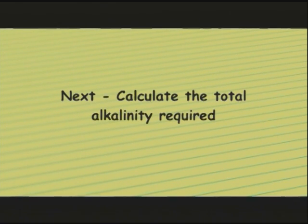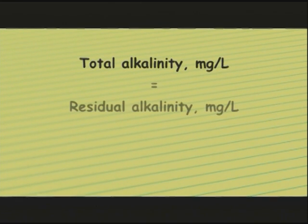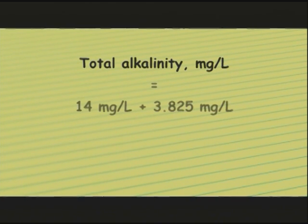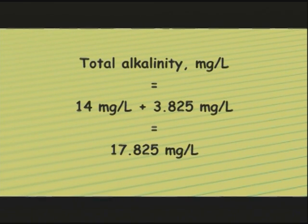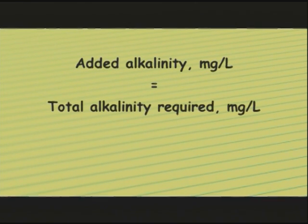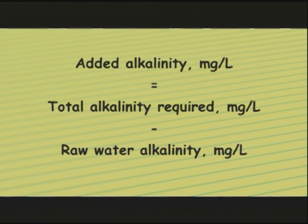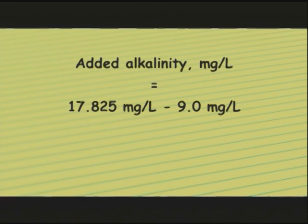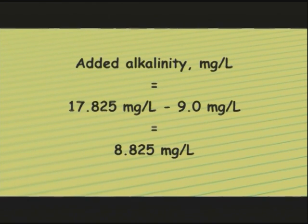Next, calculate the total alkalinity required. Total alkalinity equals residual alkalinity plus alkalinity consumed by alum: 14 mg/L plus 3.825 mg/L equals 17.825 mg/L total alkalinity. Then, determine the amount of alkalinity that must be added to the water: added alkalinity equals 17.825 mg/L minus 9.0 mg/L, which equals 8.825 mg/L of added alkalinity.